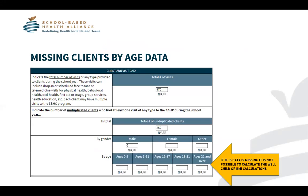The third common error is that a record is missing clients by age data. This data is required in order to report the well child visit and the BMI measures. The definition of the well child visit includes clients ages 0 to 21, and the definition of the BMI measures includes clients ages 3 to 17. We use the data reported in the clients by age fields to calculate the denominators for well child visits and BMI measures. Because the data is missing for clients by age in this example, it's not possible to calculate the denominator for the measure and the report will be blank.